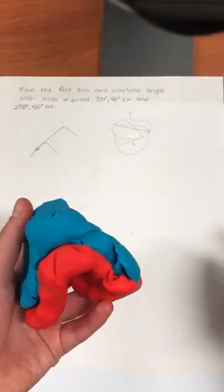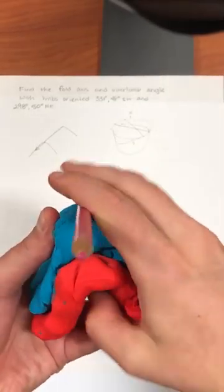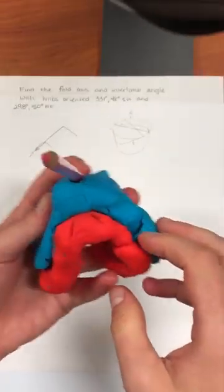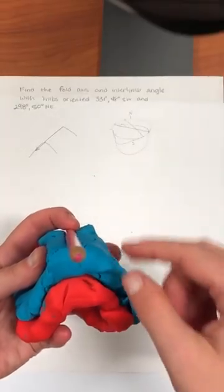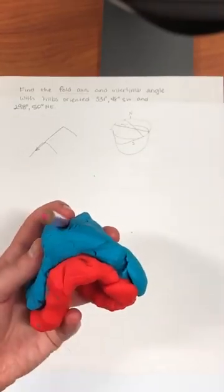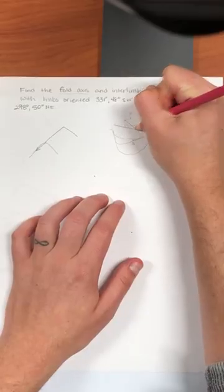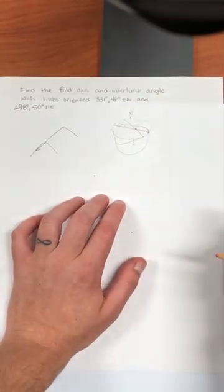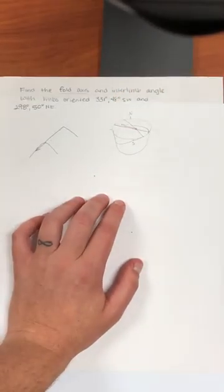Now the fold axis here is gonna be the line that runs right along the center of the fold. So this is our fold axis. Another way to think of it is the fold axis is where these two limbs are intersecting. So for us on the stereonet, we're gonna look for this place where these two limbs are intersecting, and that intersection point represents this line back here, where those two planes are coming together.